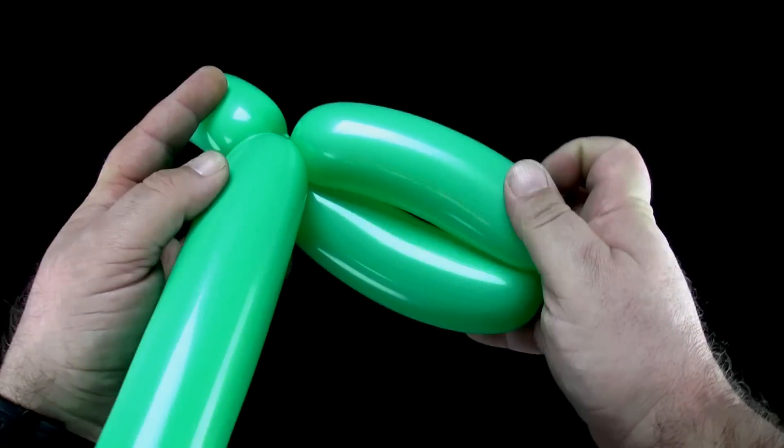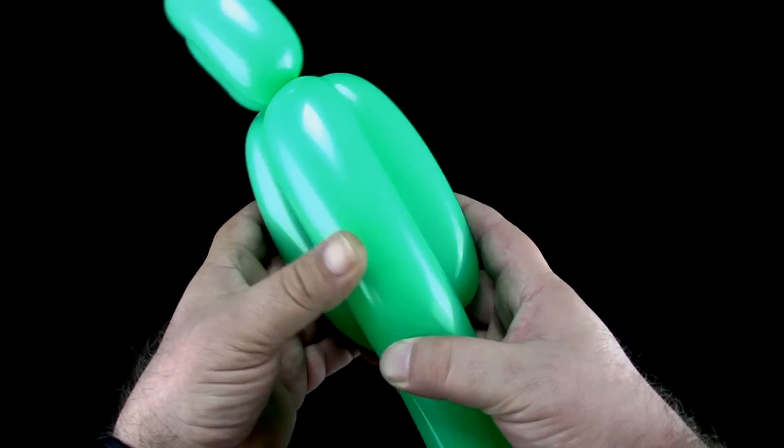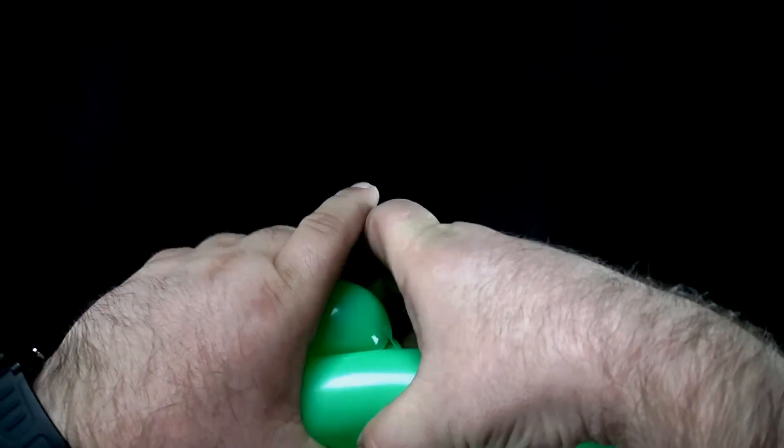Lay the balloon along the six finger bubbles and, measuring against the lock twisted bubbles, twist a bubble of equal length.